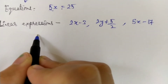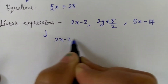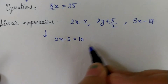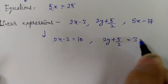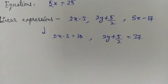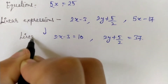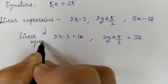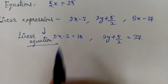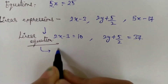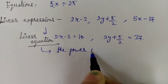When you write linear expressions with an equals to sign, that becomes the equation. For example, you have written 2x minus 3 equals 10, or you have formed the equation 2y plus 5y equals 37. So this becomes a linear equation — a linear equation — because here the power of the variable is 1.